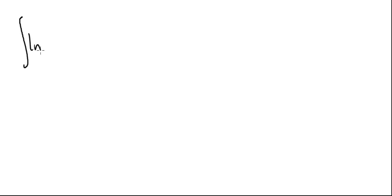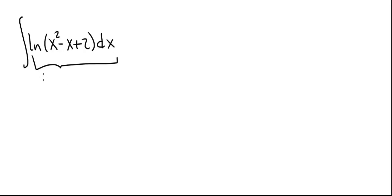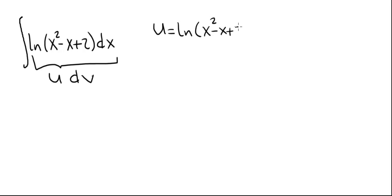We're going to evaluate the integral of natural log of x squared minus x plus 2. We're going to use both integration by parts as well as partial fractions to do it. We'll call the original integral the integral of u dv, which means that u must be the natural log part, natural log of x squared minus x plus 2, and dv must be the rest, which is just 1 times dx.